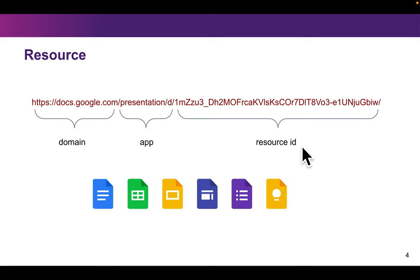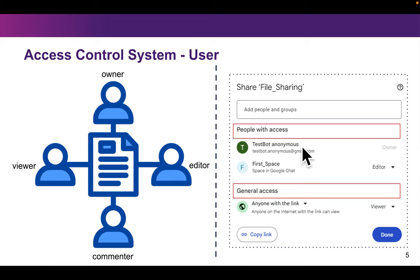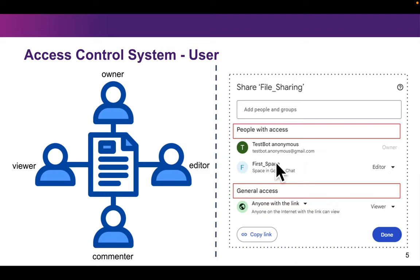and the third is the resource ID. If the user wants to access a specific resource, they can take different roles like the owner, the editor, or the commenter. The owner of the resource can share it with others through two ways: one is by adding another user's email address, or by using general access, which means anyone on the internet with the link can view and access the resource.